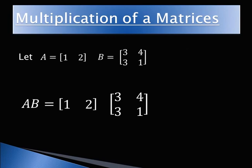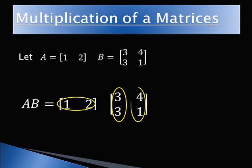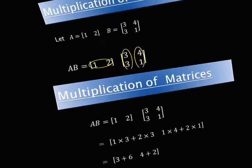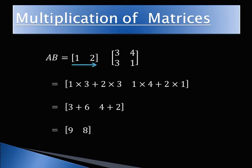Now we will see the method for how to multiply two matrices. The first row of matrix A is multiplied by the first column of matrix B, and then the first row of A is multiplied with the second column of matrix B.